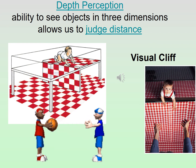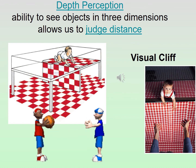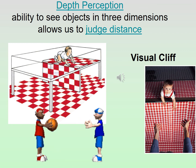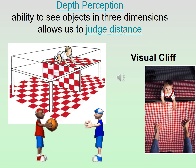So they developed a test using a glass table top. A tablecloth goes down to the floor, and underneath half the table is a solid surface with a tablecloth on it. The parent stands on the clear side and encourages the child to crawl across. If a child crosses, they lack depth perception. What they found was most children, when placed on the solid-looking side and encouraged to crawl over, would not. Many tried to put their foot down, hit the glass, and seemed very confused. Most children, once they can crawl, do have depth perception.